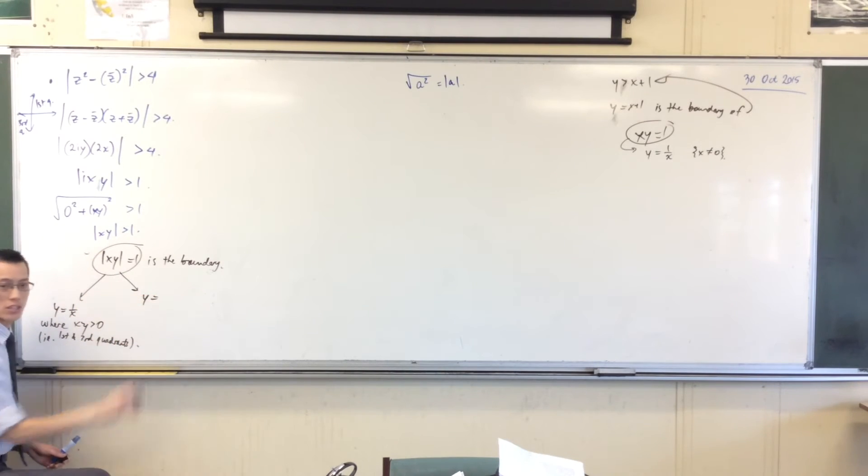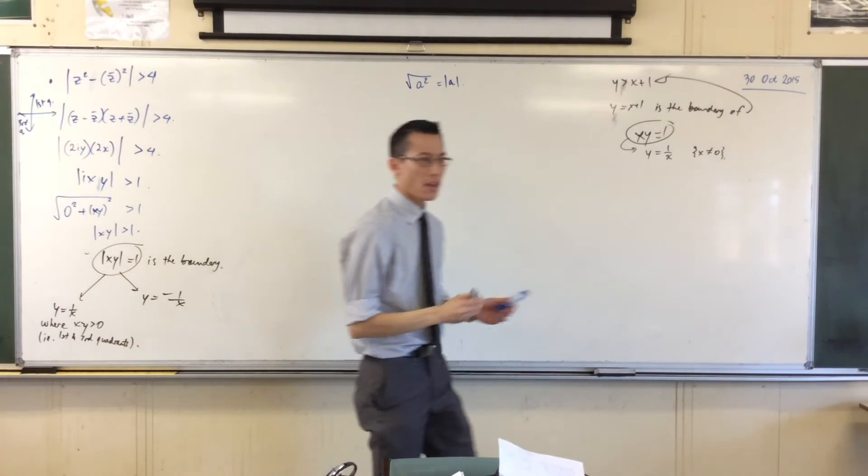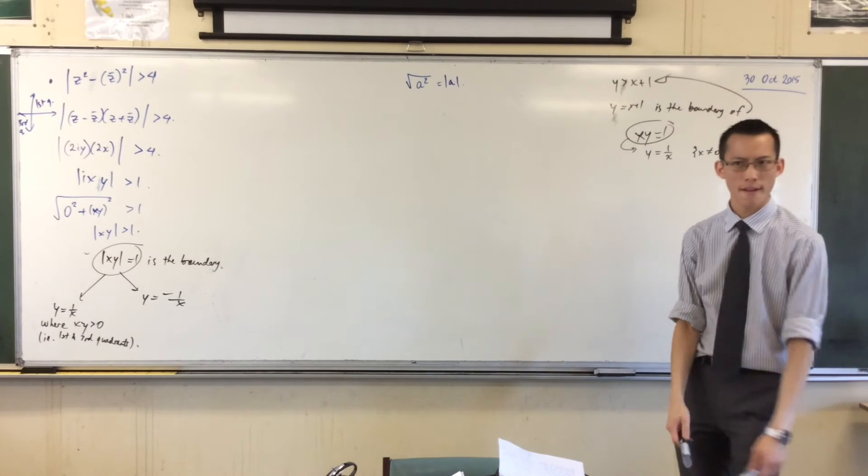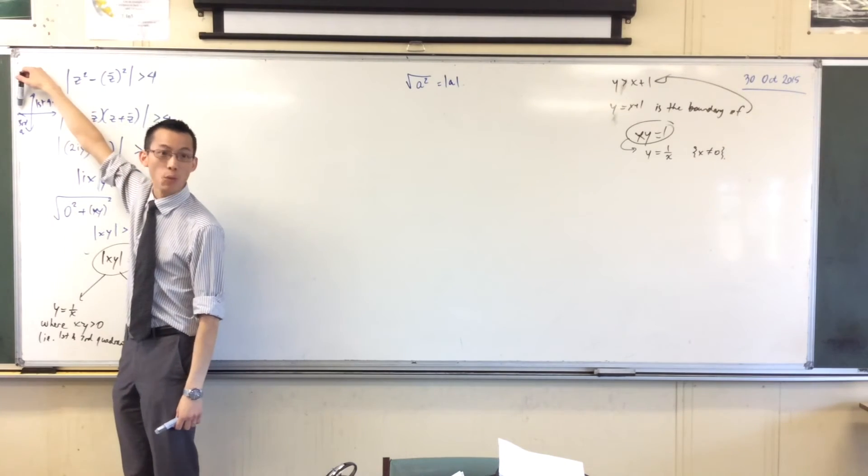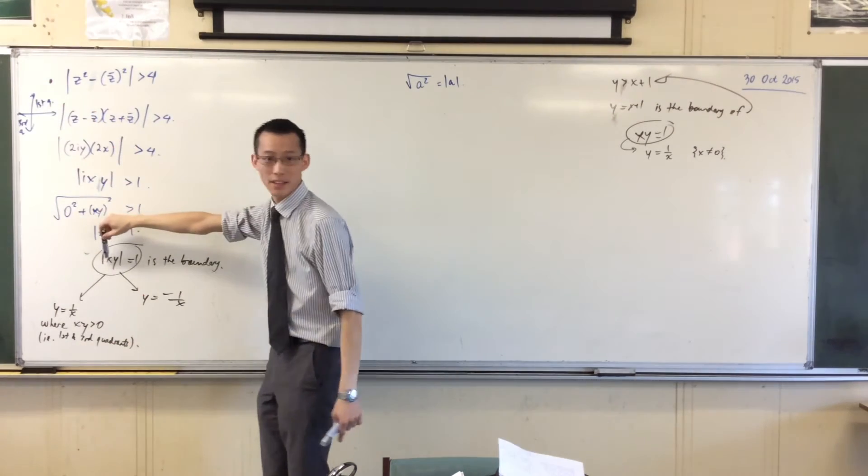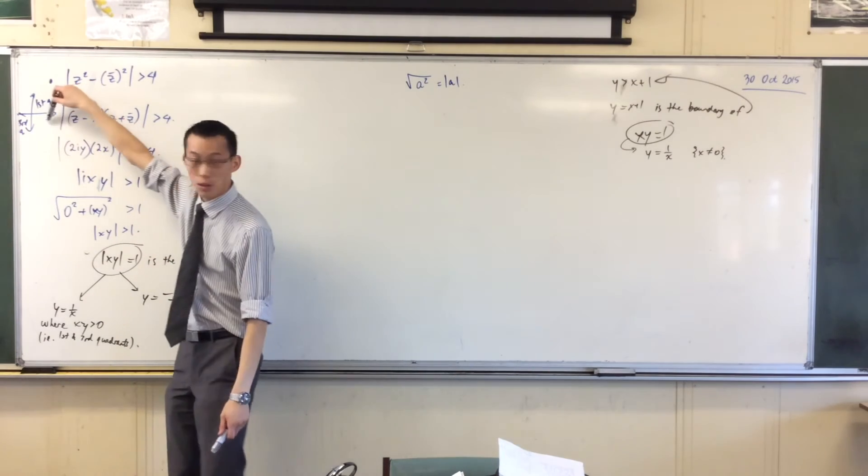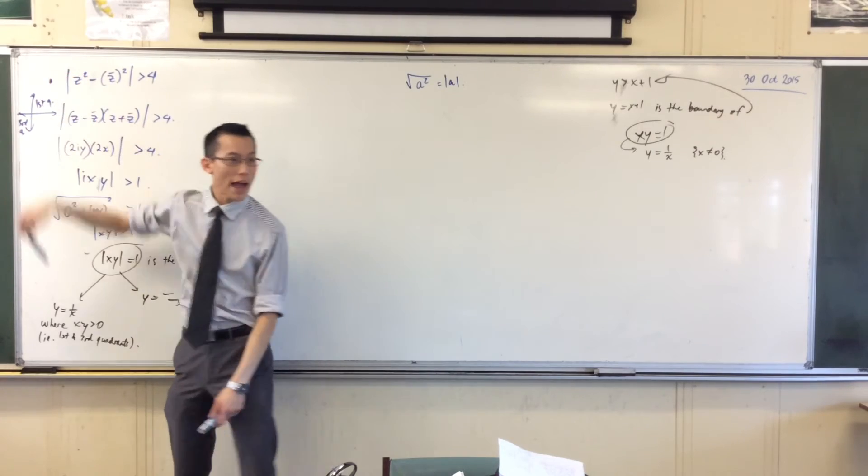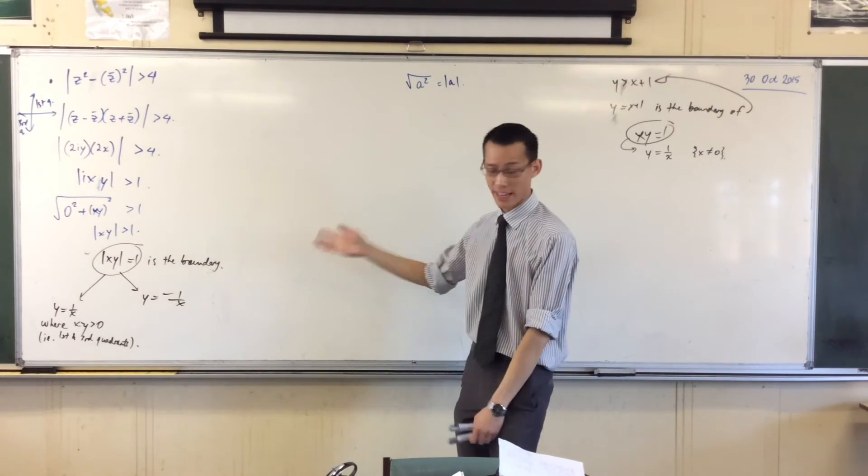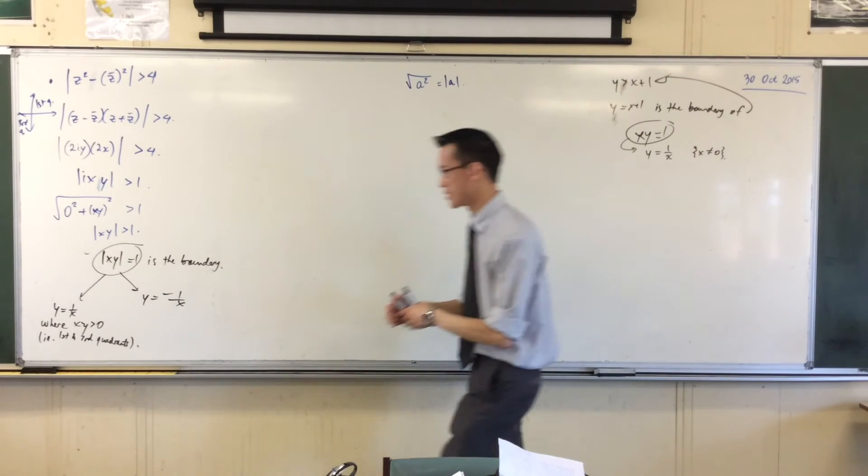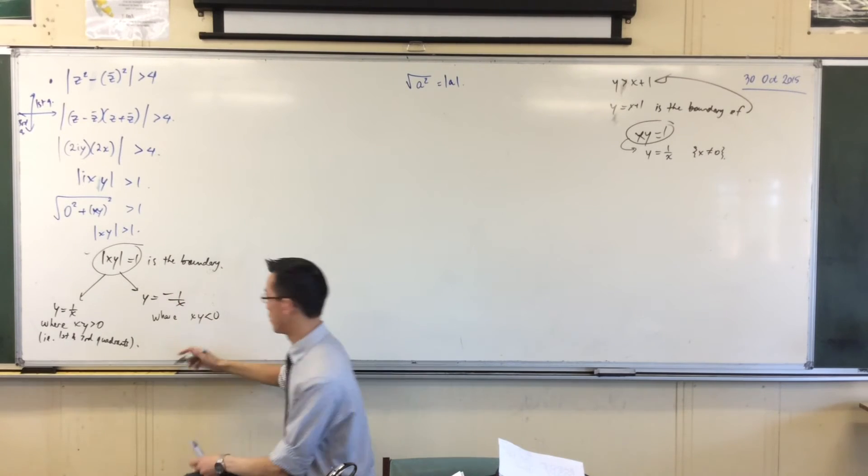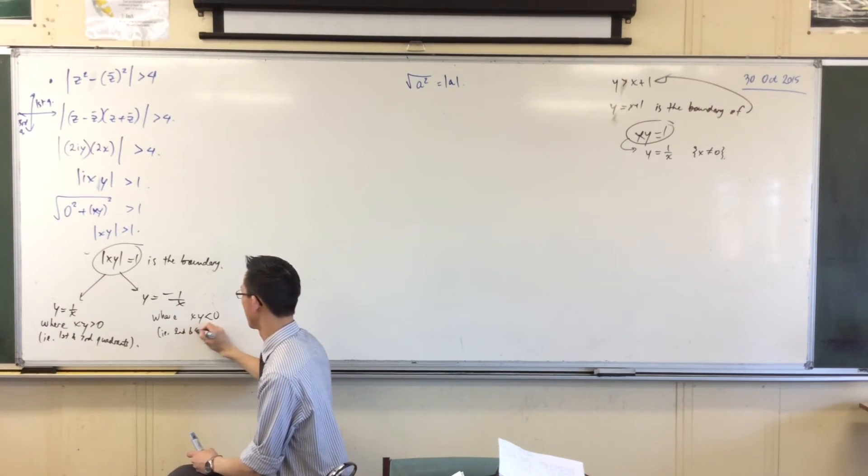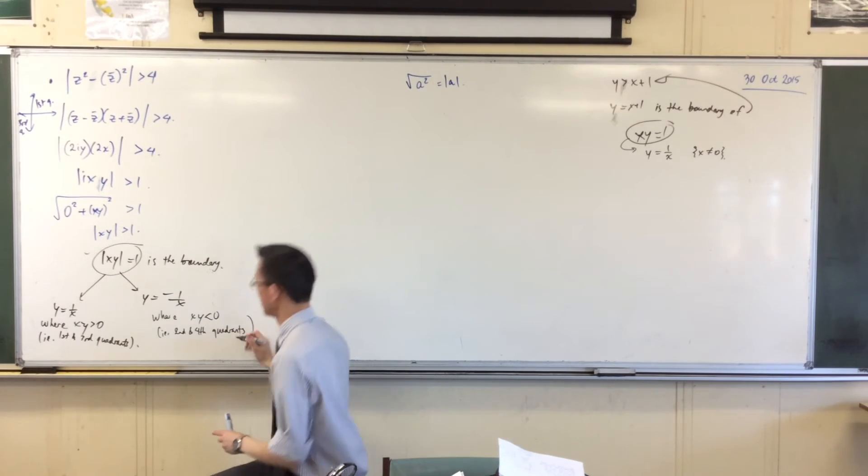But then there's the other case, right? Where it's not just one over X, it's minus one over X. Where is that the case? In the second and fourth. It's in the second and fourth, but why the second and fourth? Because Y is negative. In the second quadrant, you've got X negative and Y positive. So the product will be negative, which is what gives you the negative case. And vice versa, in the fourth quadrant, you've got X positive and Y negative. So again, only one of them is negative, so the product is negative. So we get the negative case. So I'm going to say that here, where XY is negative, namely the second and fourth quadrants.